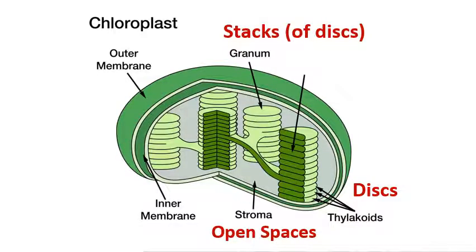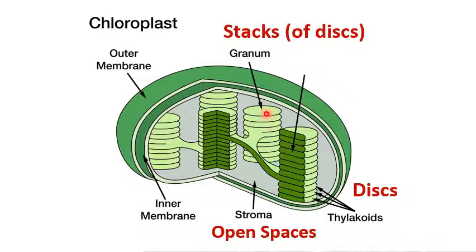If you zoom in on the chloroplast, you'll see there's a bunch of different membranes inside. You have your two membranes around the outside — the outer membrane and the inner membrane — then inside the chloroplast you have an empty space called the stroma, with all of these disks inside of it. The individual disks are called thylakoids, and most of them are arranged into stacks called grana, where one stack would be a granum and multiple stacks would be grana. The interior space of a thylakoid disk is called the lumen.